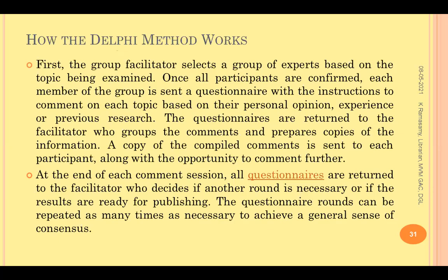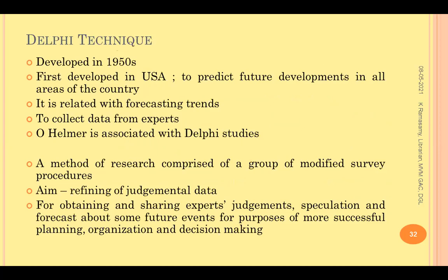The Delphi method is a forecasting tool developed and used in the USA to predict the future. Data is collected from experts, not from individual respondents. Ohlemer is associated with the development of Delphi studies. The purpose of the Delphi study is to get refinement on judgmental data — each expert gives judgments which are refined through subsequent rounds. Judgments are shared and used for predicting what is going to happen in a particular environment or institution, enabling successful planning, organization, and decision-making.